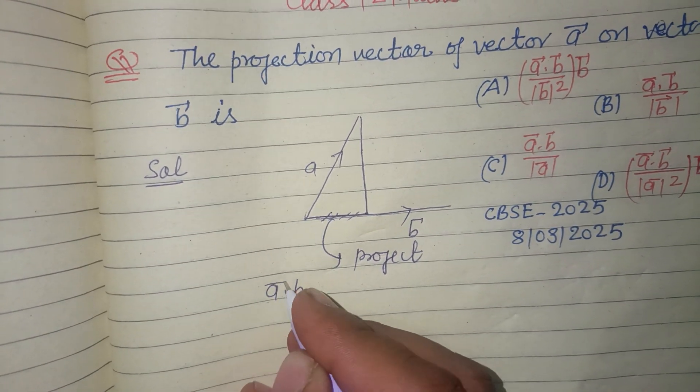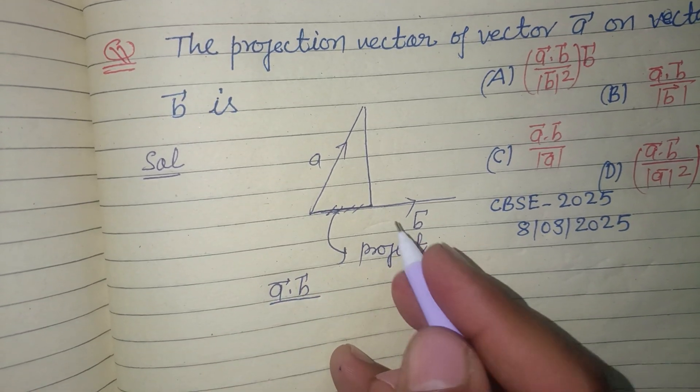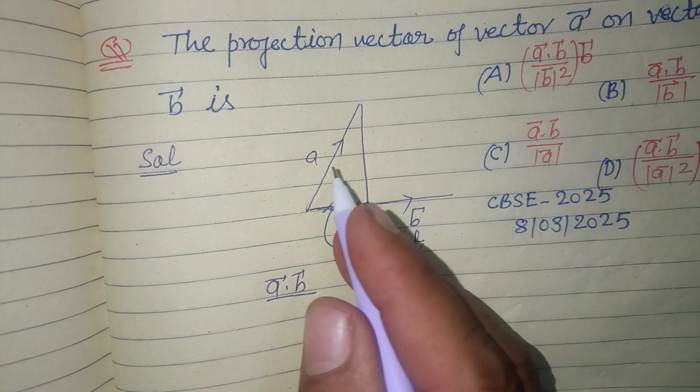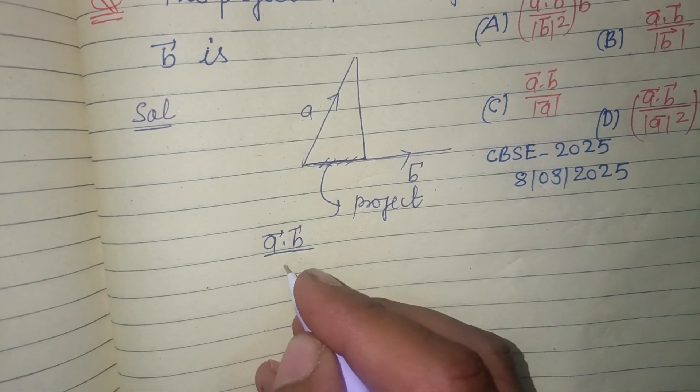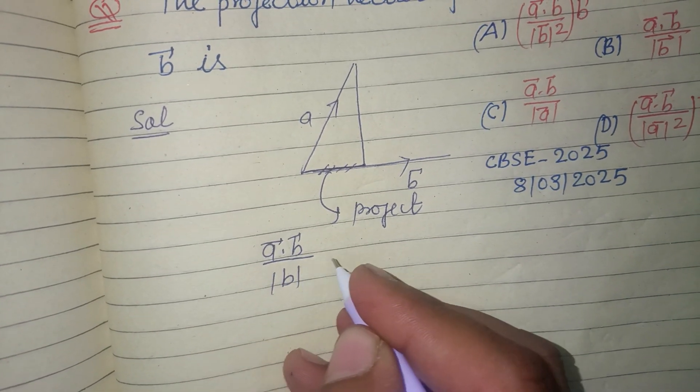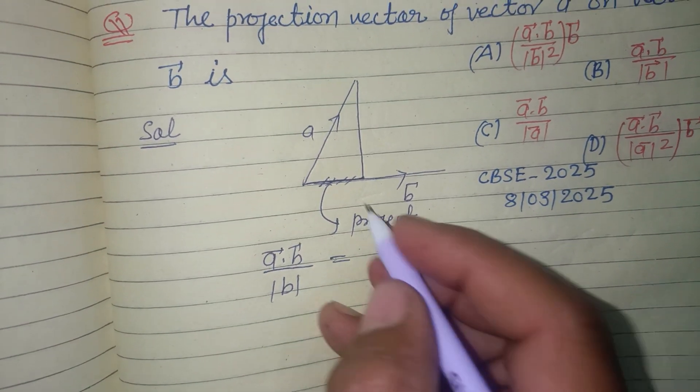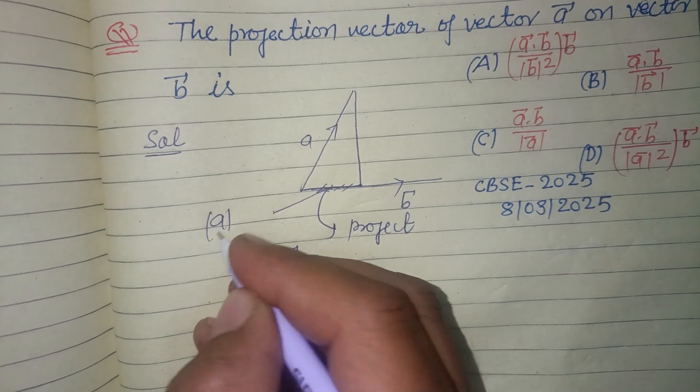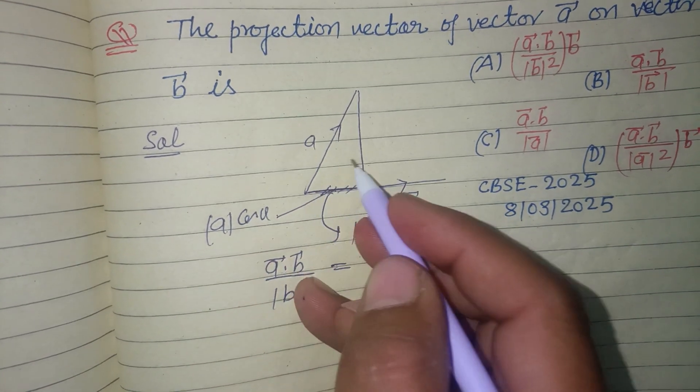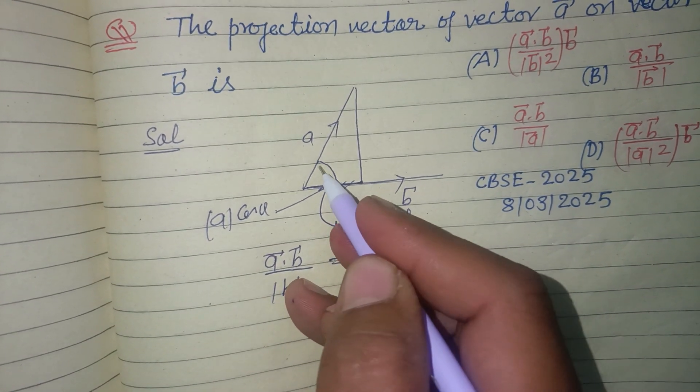a dot b, because projection is asked of a on b, therefore divided by mode of b. So if you know, this part will be mode a cos theta, because you know that on this side its component is a cos theta.